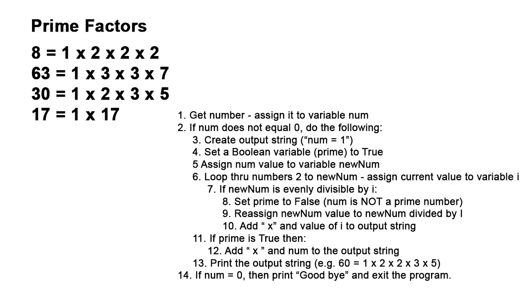I can write out those steps as pseudocode. We're going to get a number, assign it to a variable called num. If num does not equal zero, make sure it's a positive integer, we're going to do the following. Everything that's indented is part of this if structure. We're going to create an output string in which we take whatever number they specify and say it equals 1. This can be the beginning of our string, like 8 equals 1 or 63 equals 1. We're going to set a boolean variable called prime to true and we're going to use that to determine whether this is a prime number or not. We're going to assign the num value to a second variable called newNum so we can reserve our num value.